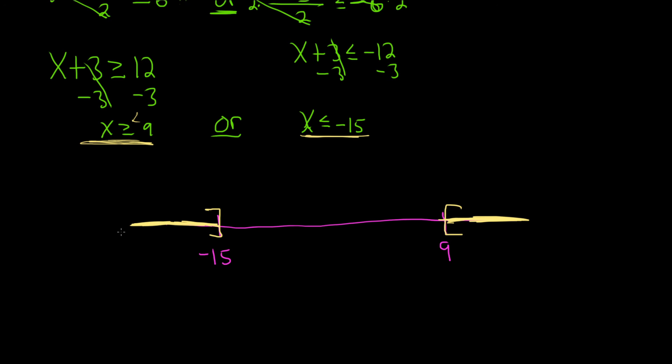So now we can combine our answers. It'll be negative infinity to negative 15. You get it from the yellow, from the shading. Then you have to connect these sets, so we use the union symbol. And then we start back up at 9, so 9 to infinity. That would be the final answer. And this is called interval notation.